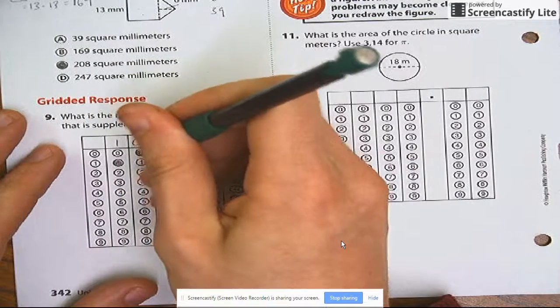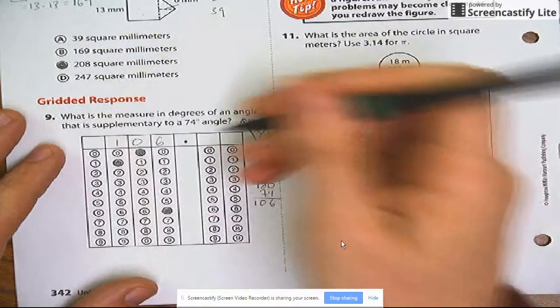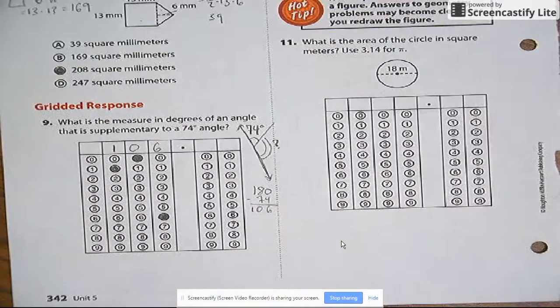So again, with grid ends, I write it up at the top. And then I bubble in. Perfect.